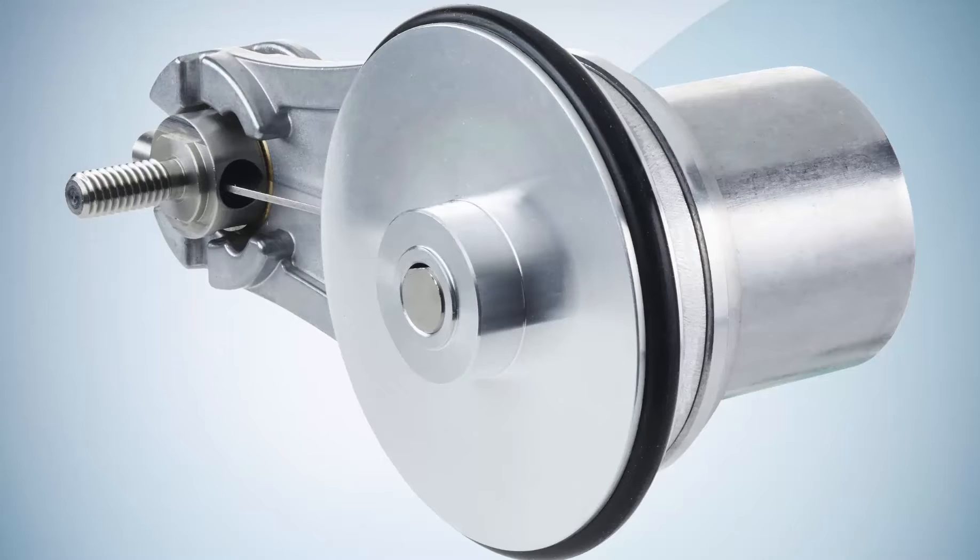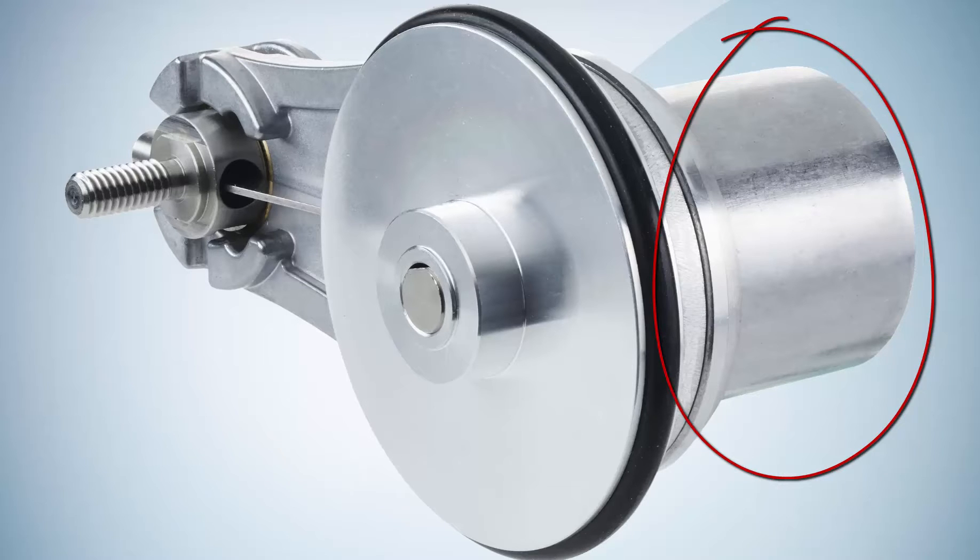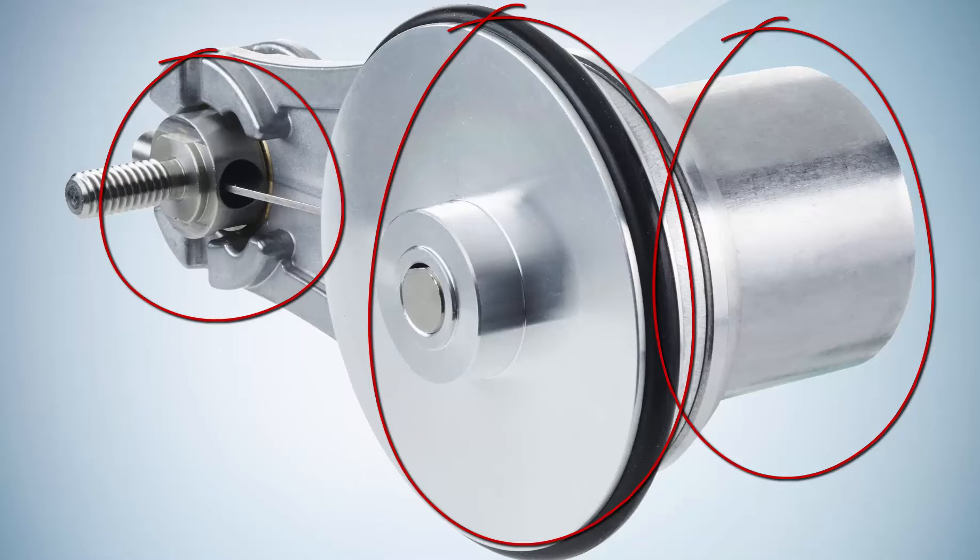The new DBV50 measuring wheel encoder from SICK is the perfect solution. Combining an incremental encoder with a choice of resolutions, a measuring wheel, and a patented spring assembly, the DBV50 can be mounted in minutes with 100% repeatable spring tension.